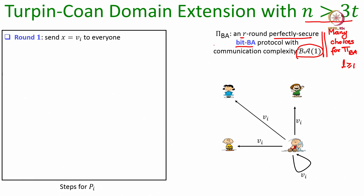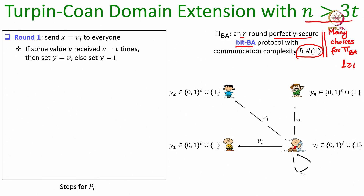During the first round every party sends its L-bit input to everyone. Then every party checks: if it has received a string V from n minus T different parties, it assigns the string V to a variable Y; otherwise it sets Y to a null (bot) value.